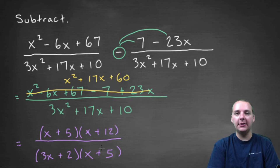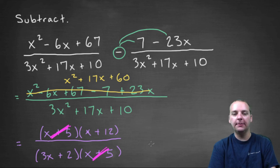Okay, actually I see what's going to happen here. It's actually starting to become clear. When I factored the numerator and denominator, I see we actually have a common factor of x plus 5. So we can mark that out, and that works out pretty nicely. So our final answer, our final answer would be x plus 12 divided by 3x plus 2.